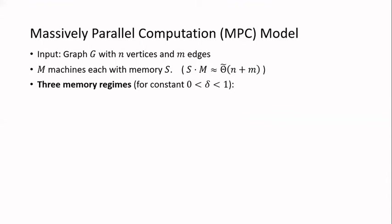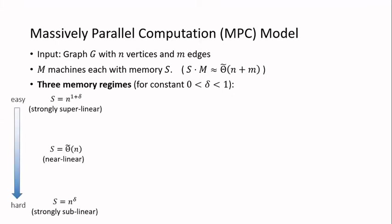We can see that if we are given more memory per machine, then it will be easier to design an algorithm and we can achieve better round complexity. In the literature, there are three memory regimes being studied: the strongly superlinear regime where memory S equals n to the 1 plus delta for some positive constant delta; the near-linear memory regime where S is roughly equal to n with some poly-log n factors; and the strongly sublinear regime where S is only n to the delta for some small constant delta.